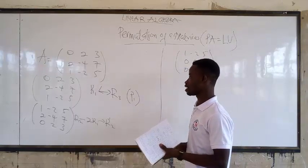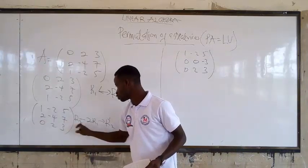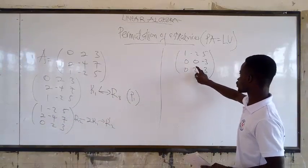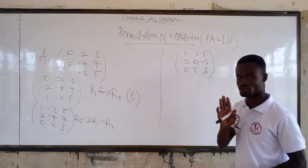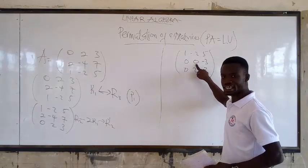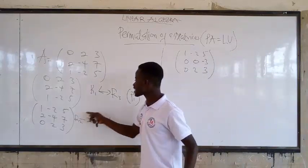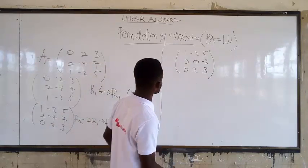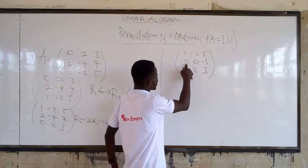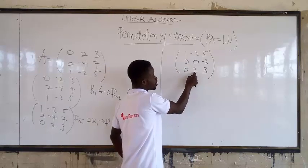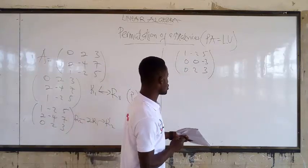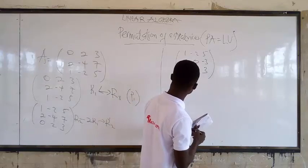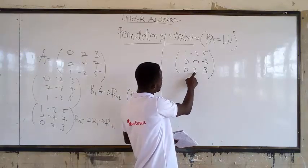After that operation we get: row 1: 1, -2, 5; row 2: 0, 0, -3; row 3: 0, 2, 3. We didn't specifically try to make the third row's entry 0 — that happened naturally. Our goal is to make all below-diagonal entries 0.